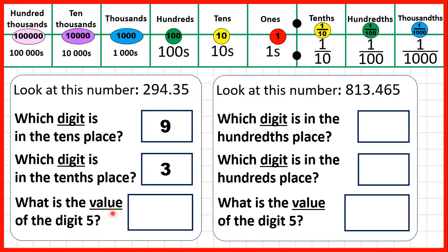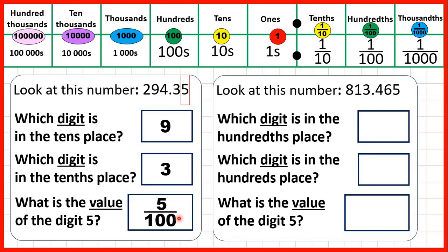What is the value of the digit five? We can find the digit five and see that it's the second digit after the decimal point. The second place value column after the decimal point is the hundredths column, so that five stands for five hundredths. We can write that as 0.05, or express the value as a fraction — five hundredths.